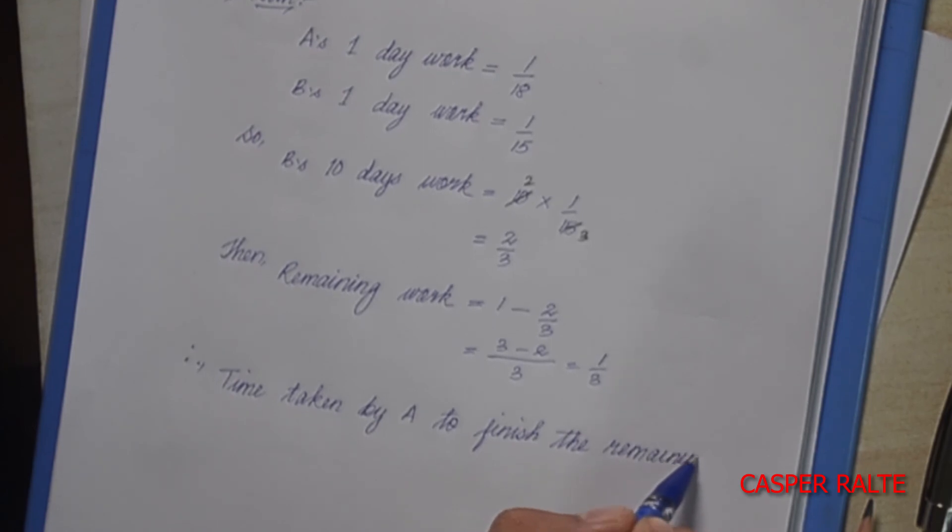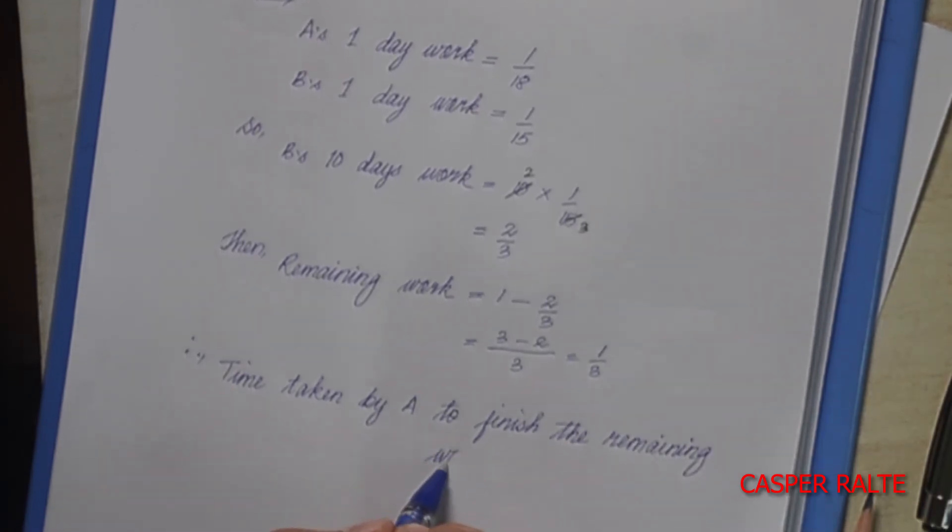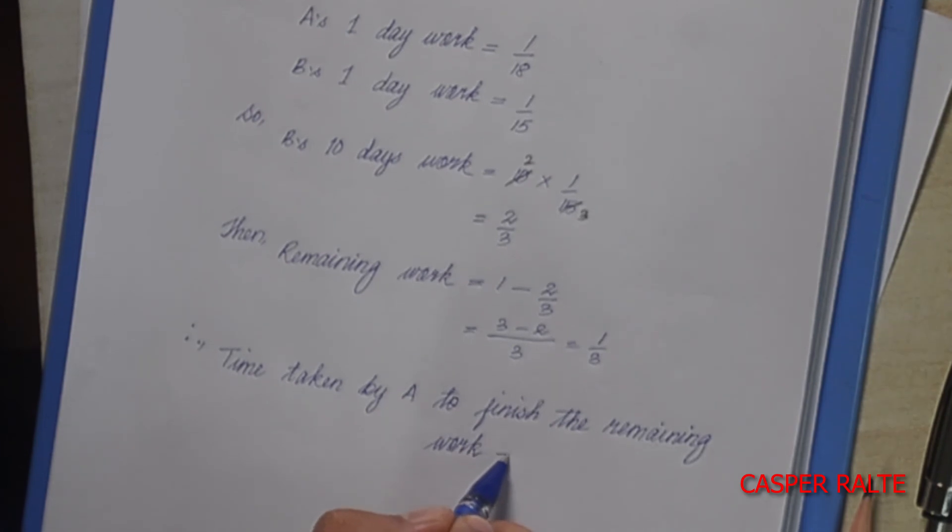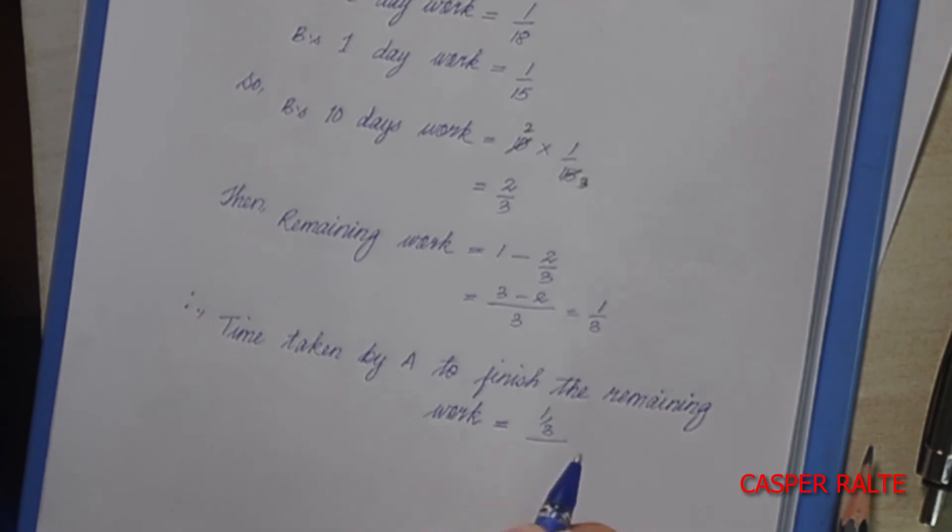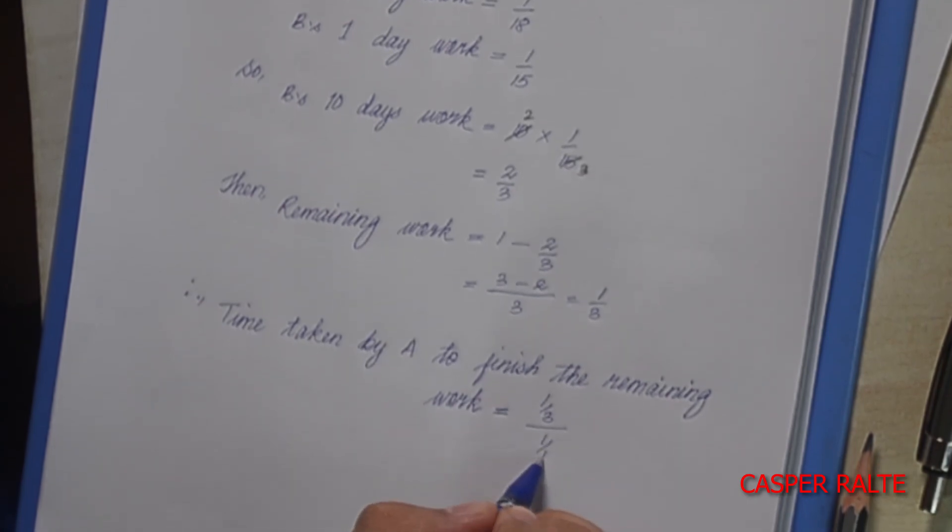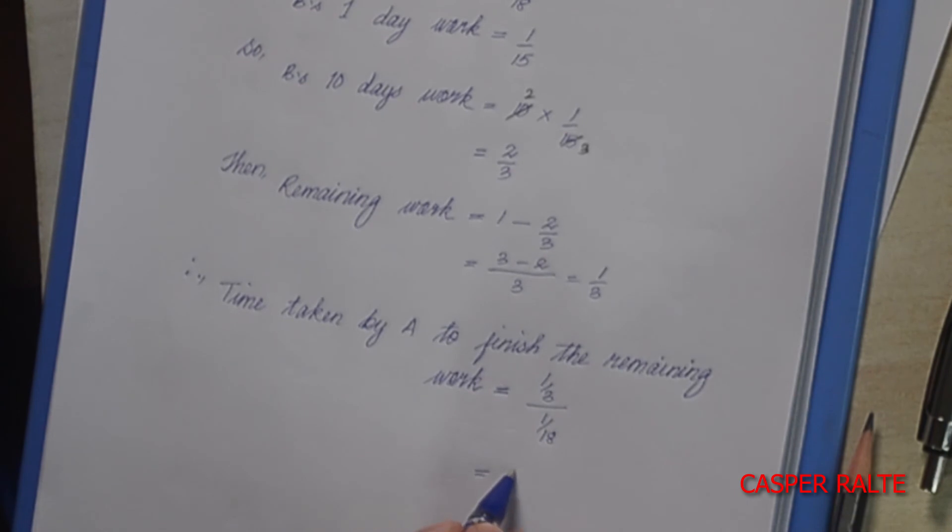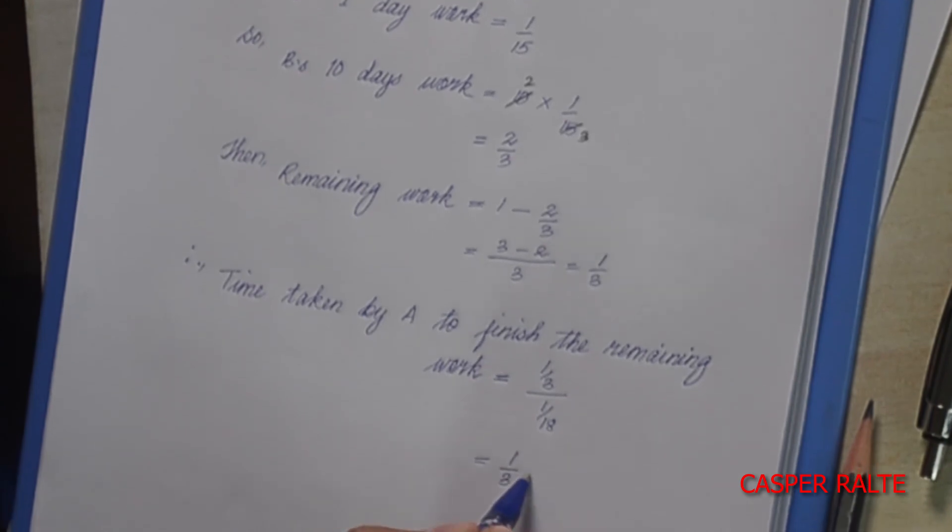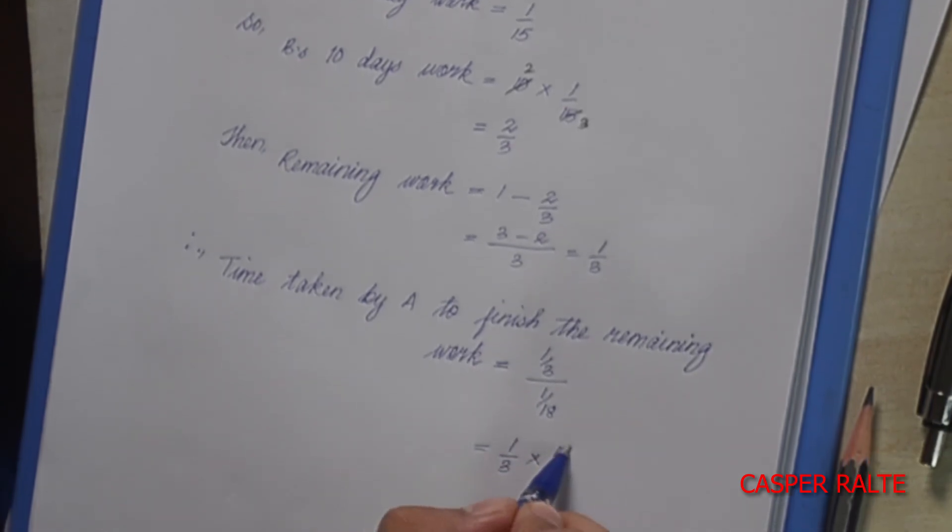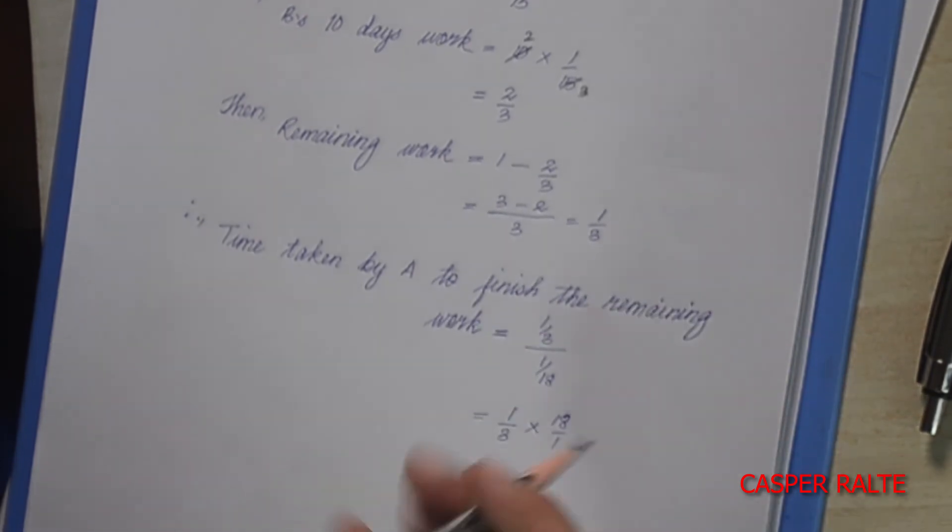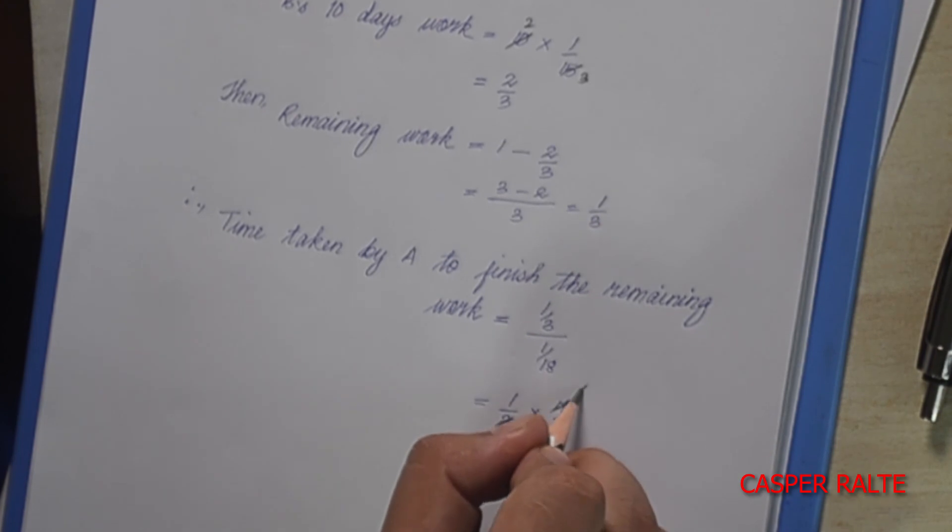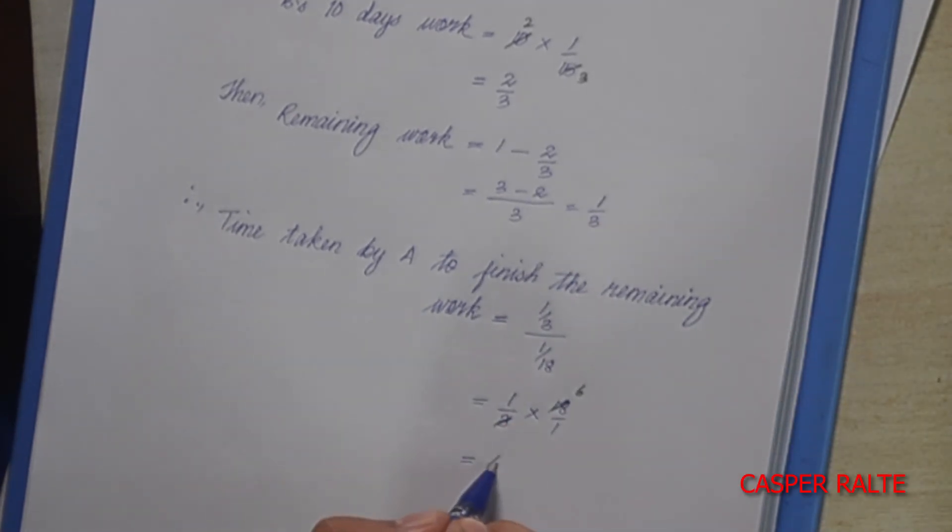One by three times 18. Three sixes are 18, so six days.